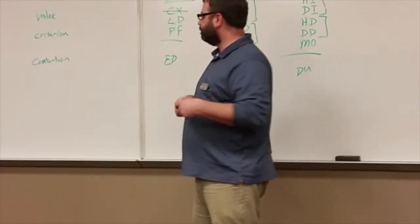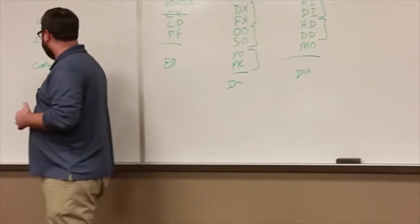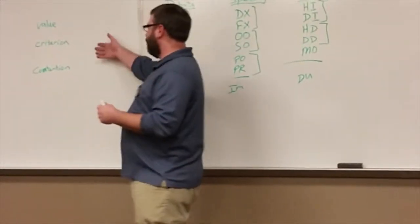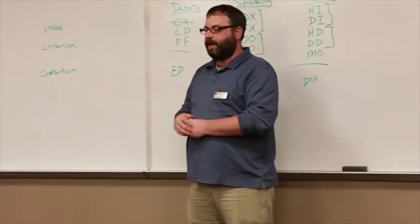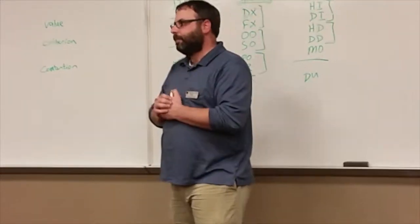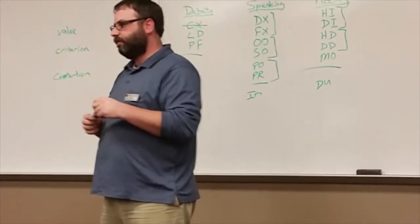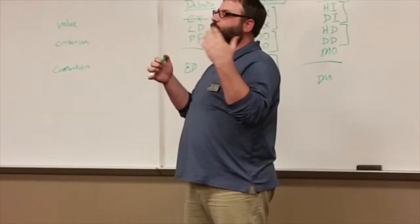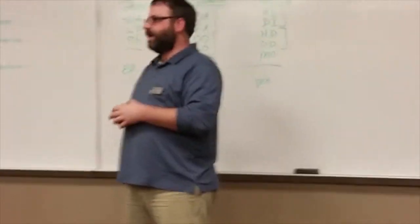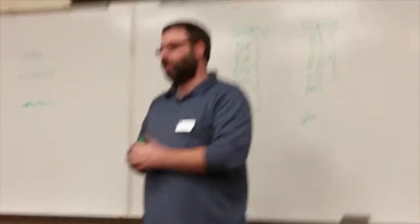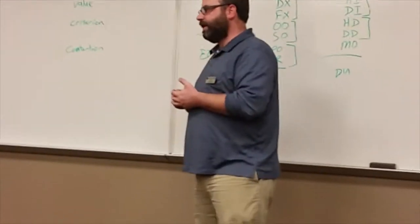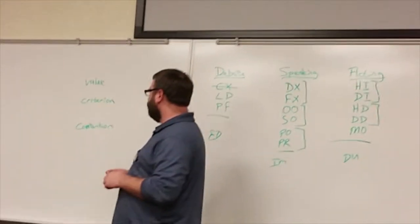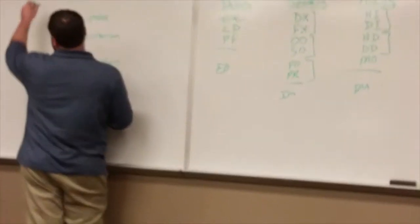The contentions are the main points that they're arguing specific to the topic. If I say my value is societal welfare, my criterion is social contract, I'm going to argue my first contention is that if employers had a living wage then society would be better off because there'd be less crime, or society would be better off because we would have fewer people starving, something like that.